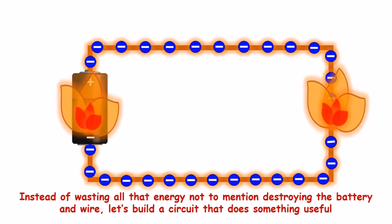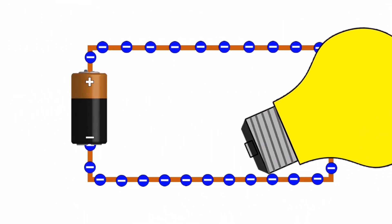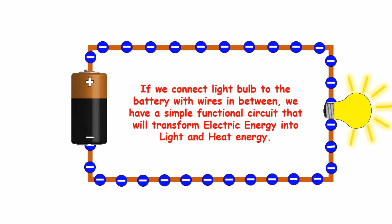Instead of wasting all that energy, not to mention destroying the battery and wire, let's build a circuit that does something useful. If we connect a light bulb to the battery with wires in between, we have a simple functional circuit that will transform electric energy into light and heat energy.